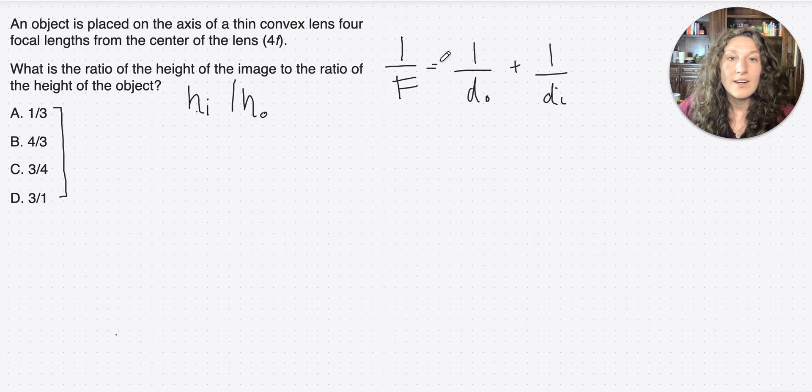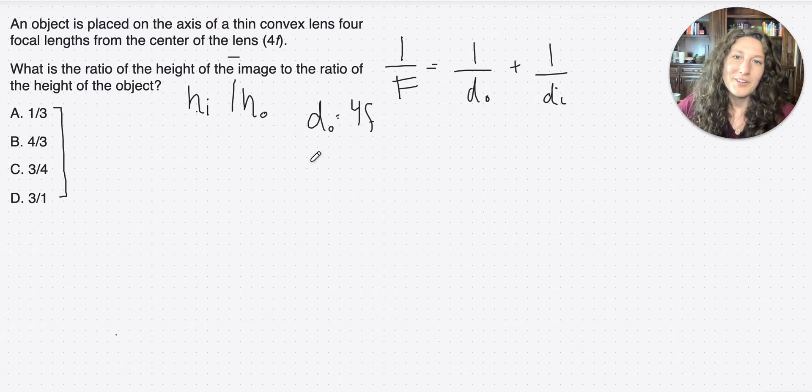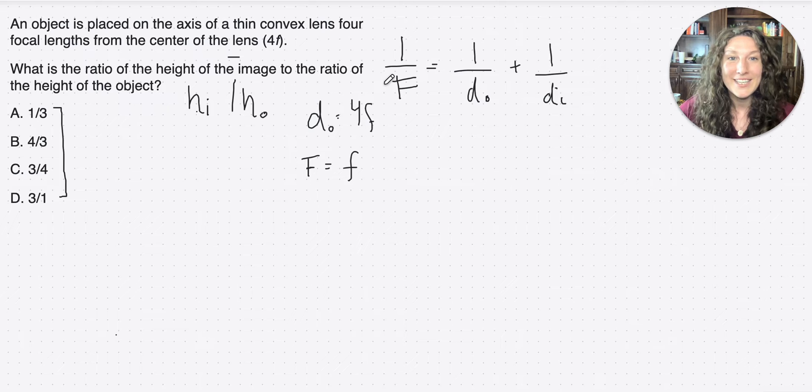So you can see here, we have distance object, distance image, and the focal length, right? And we know that if the distance of the object is 4 focal lengths, do equals 4 focal lengths, then our focal length must just be f. All right, so we have two of the three variables we need here, so we can solve for di in terms of f.